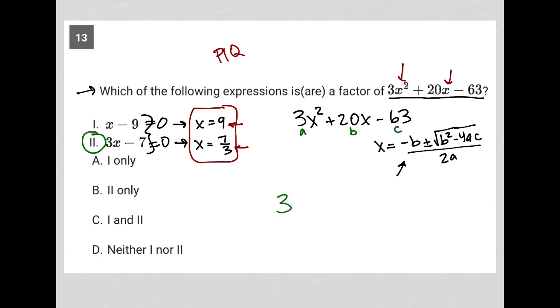So if I put in x equals 9, I have 3 times 9 squared plus 20 times 9 minus 63. 9 squared is 81, so it becomes 3 times 81, plus 20 times 9 is 180. 3 times 81 is 243, and we can already see that this actually does not equal 0. This is going to be a larger positive number, and we're only subtracting 63, so that's not going to work.